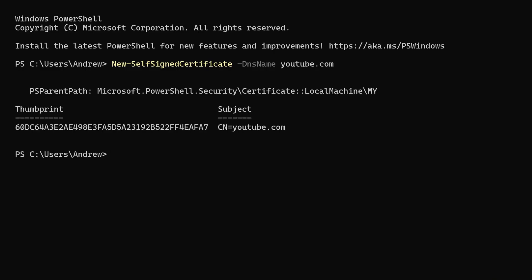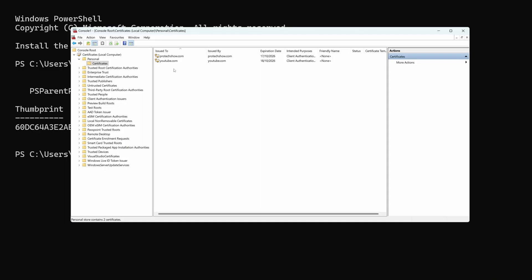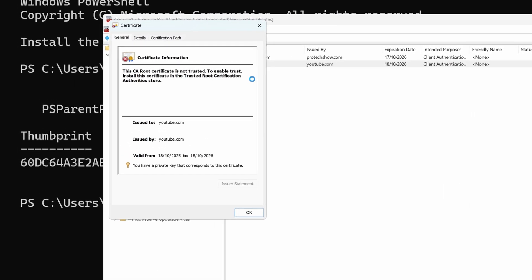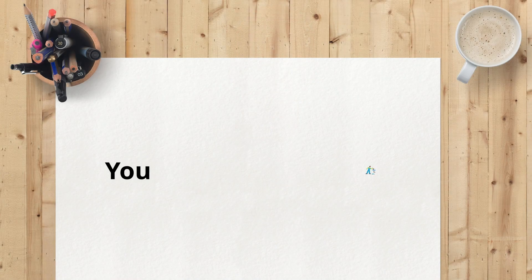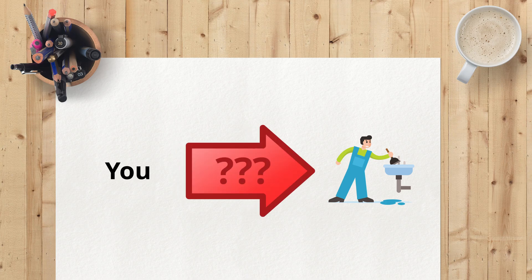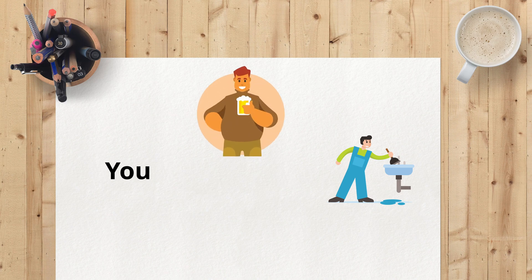Now that's all well and good having the right name in the certificate, but how do we know it's legitimate? Couldn't I just make my own certificate for youtube.com? Well yes, it's stupidly easy in fact — I can run just one short command on a Windows PC and I have a certificate for youtube.com with a private key, but if you view that certificate you'll see it isn't trusted. Certificates operate on a chain of trust, and actually you do too. Let's say you need a plumber. Barry is a plumber. Barry tells you he's a good plumber, but you don't know Barry so you can't exactly trust that he's a good plumber just because he told you so.